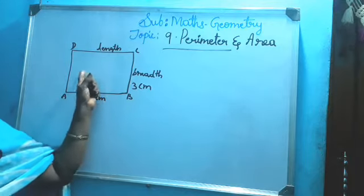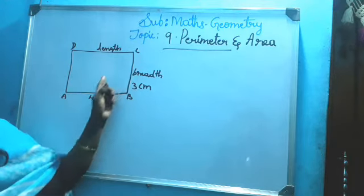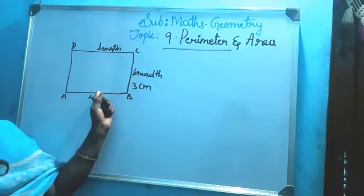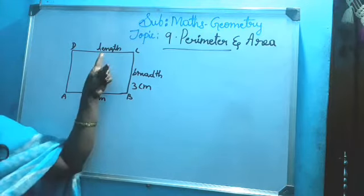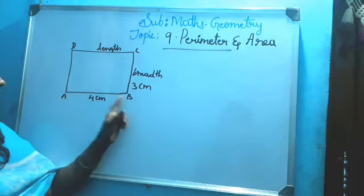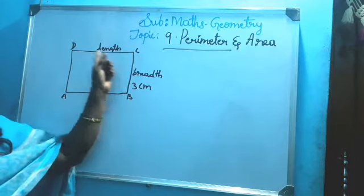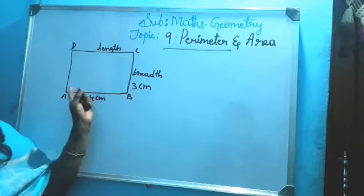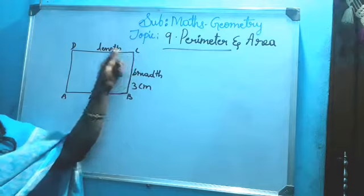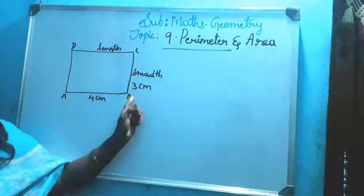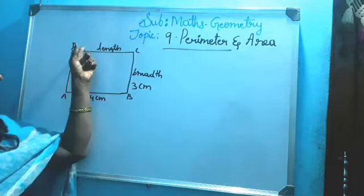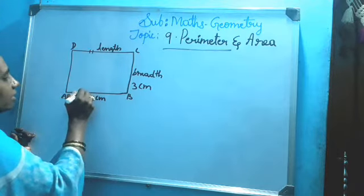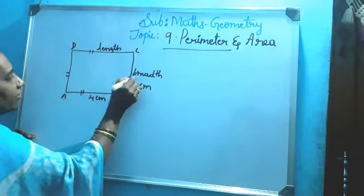Figures having two dimensions are called plane figures - it has length and breadth. This figure is a rectangle. It has two opposite sides: one is AB and CD, then another one BC and AD. These two opposite sides are equal.